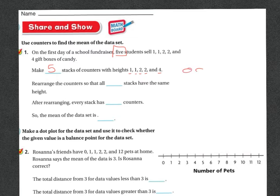So you'd have one stack where you had 1, one stack where you had 1, one stack where you had 2, another stack where you had 2, and then one stack where you had 4. Then rearrange all the counters so that all five stacks have the same height.